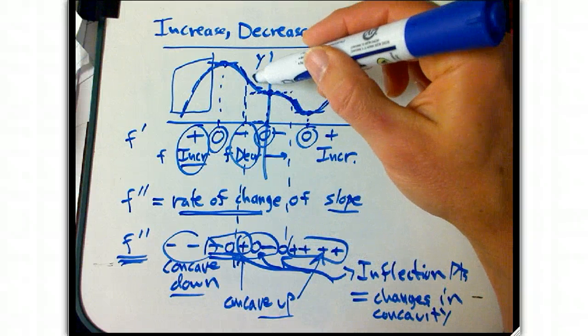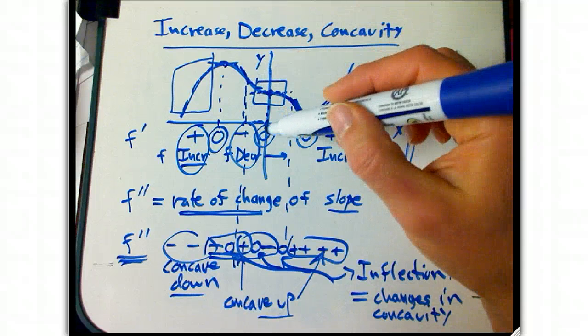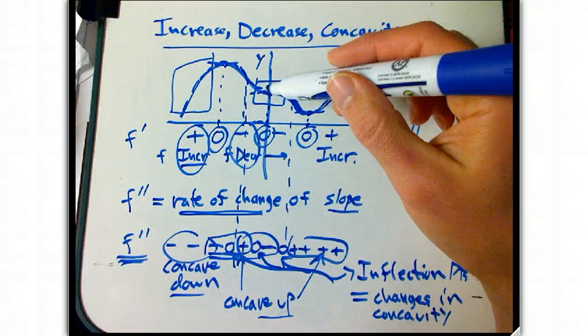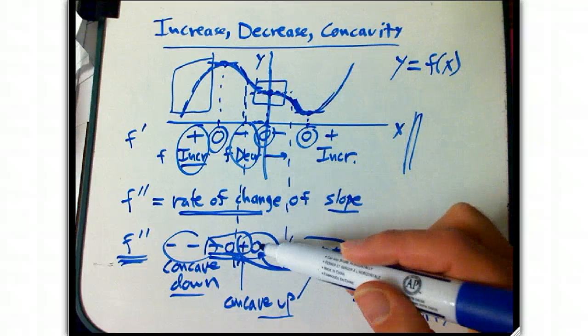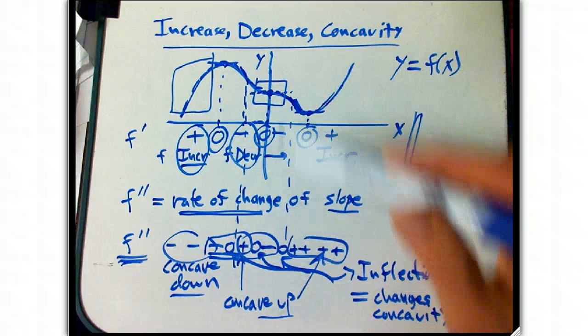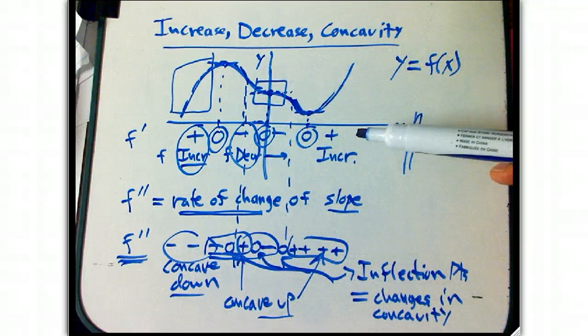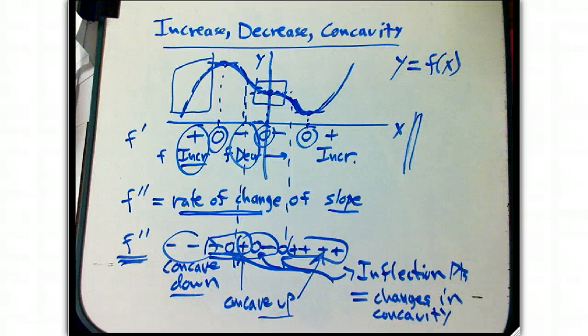The most interesting point here, I think, is this guy. Because it's a zero for the first derivative. It's a critical number. It's a stationary point. And it's also an inflection point. And those are going to be important things to look out for when we look at what's called the first and second derivative tests. But that's a good place to stop for now.